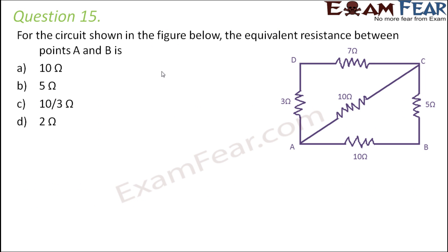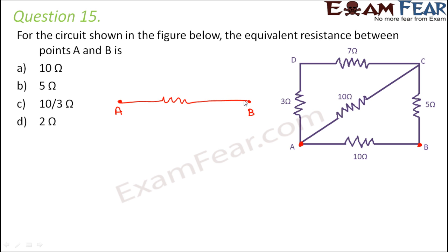Number 15: for the circuit shown in the figure below, the equivalent resistance between points A and B is. So we have to find the equivalent resistance between these two points, and we will draw a simplified version of the circuit.